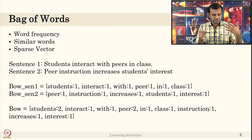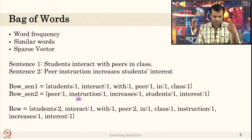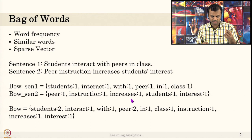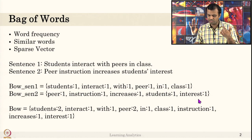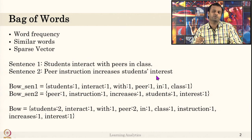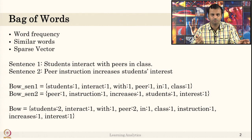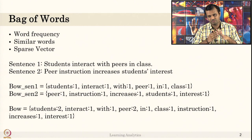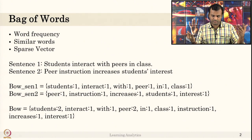For the second sentence, some student might have written: 'Peer instruction increases students' interest.' So 'peer' occurred once, 'instruction' occurred once, 'increases' occurred once, 'students' occurred once, 'interest' occurred once. I wrote the words in the form given in the sentence, but you can also use the lemma or stem form, which reduces the length of the vector.